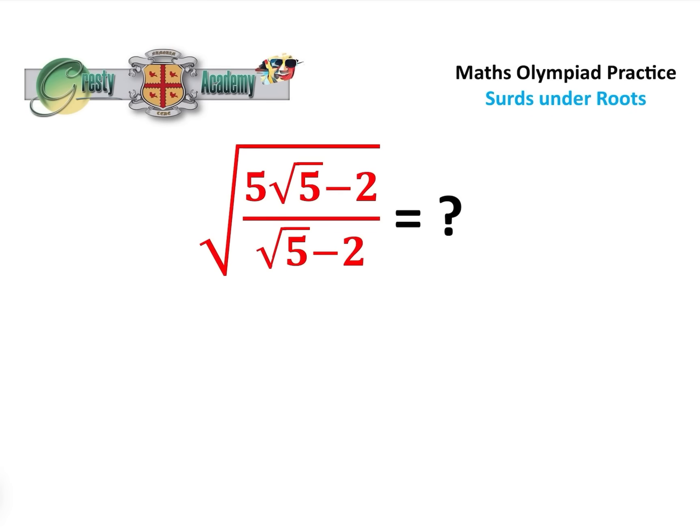This is a lovely little maths olympiad question which is a surd over a surd underneath the square root, and clearly what we have to do is make it much more simple. Okay, so let's have a look. What we got underneath the square root is 5√5 minus 2 over √5 minus 2.